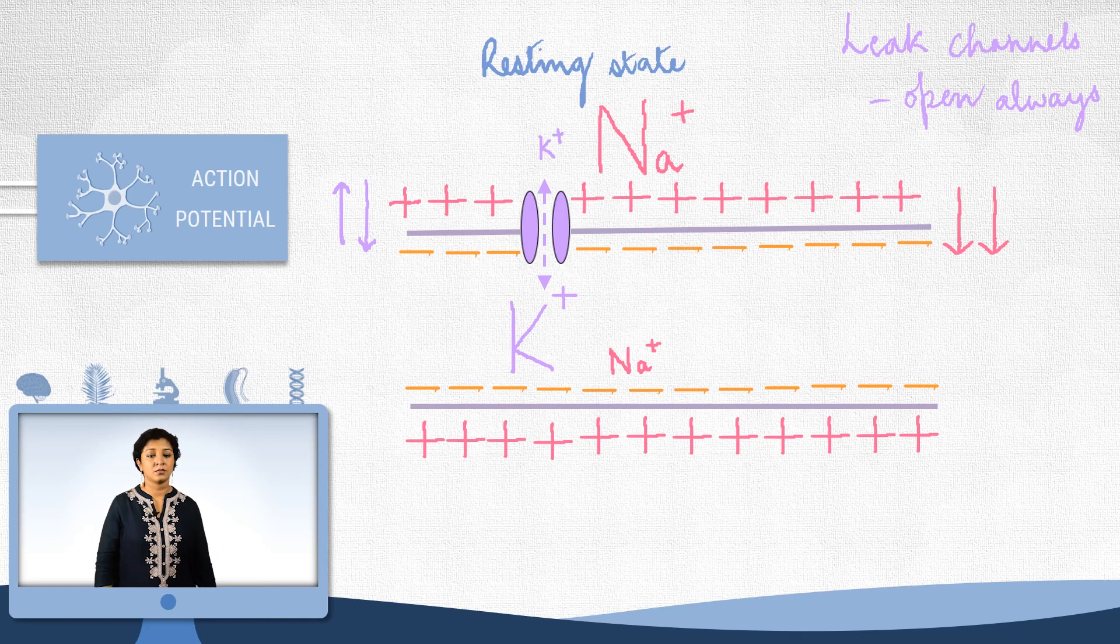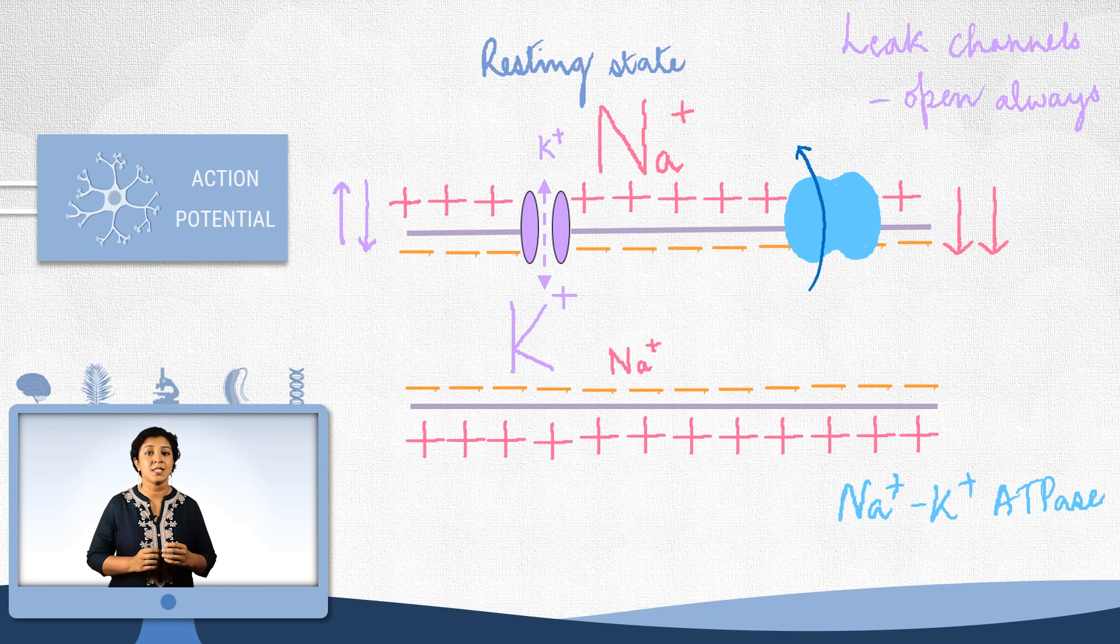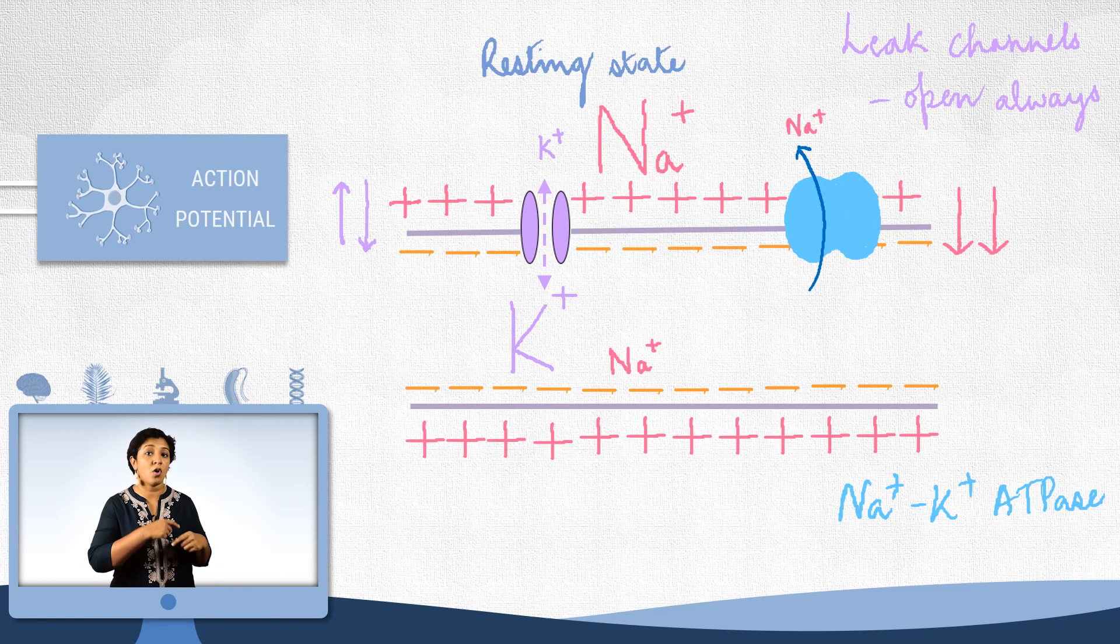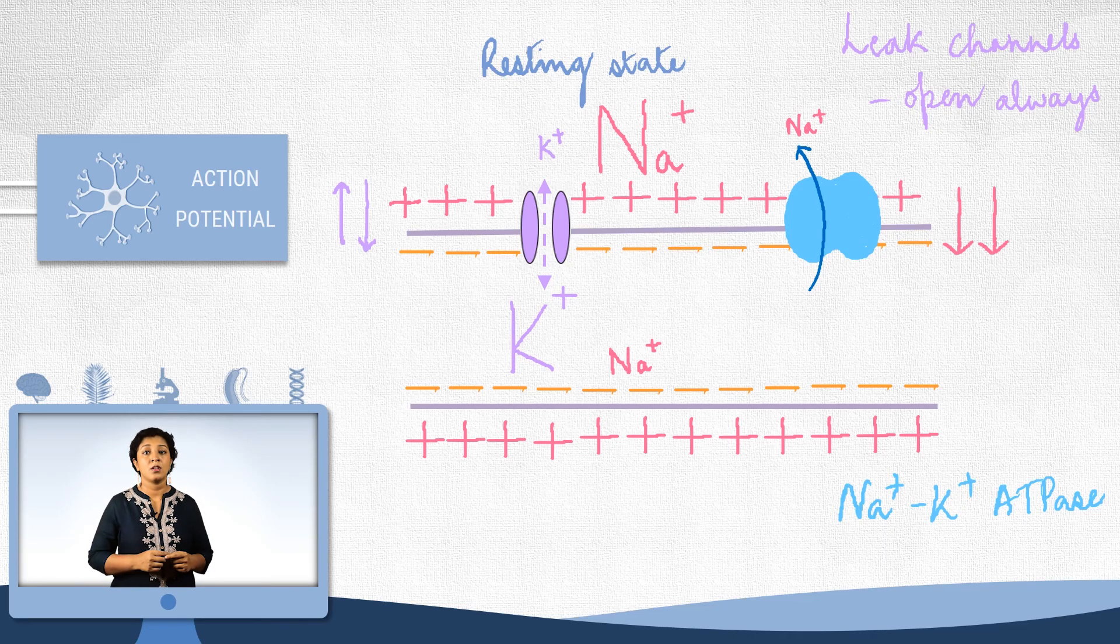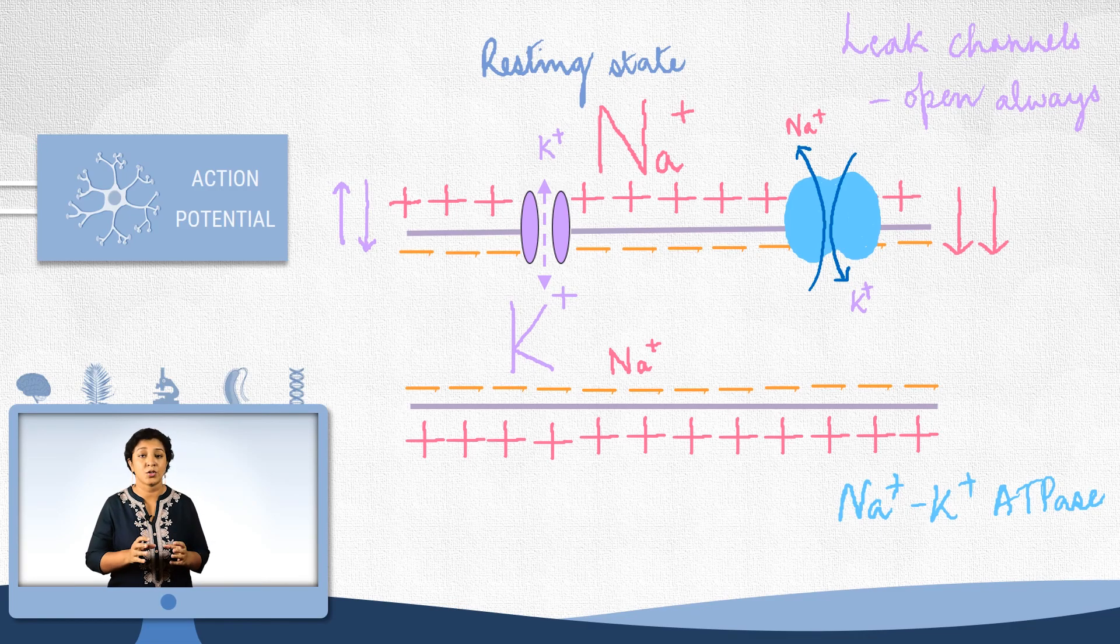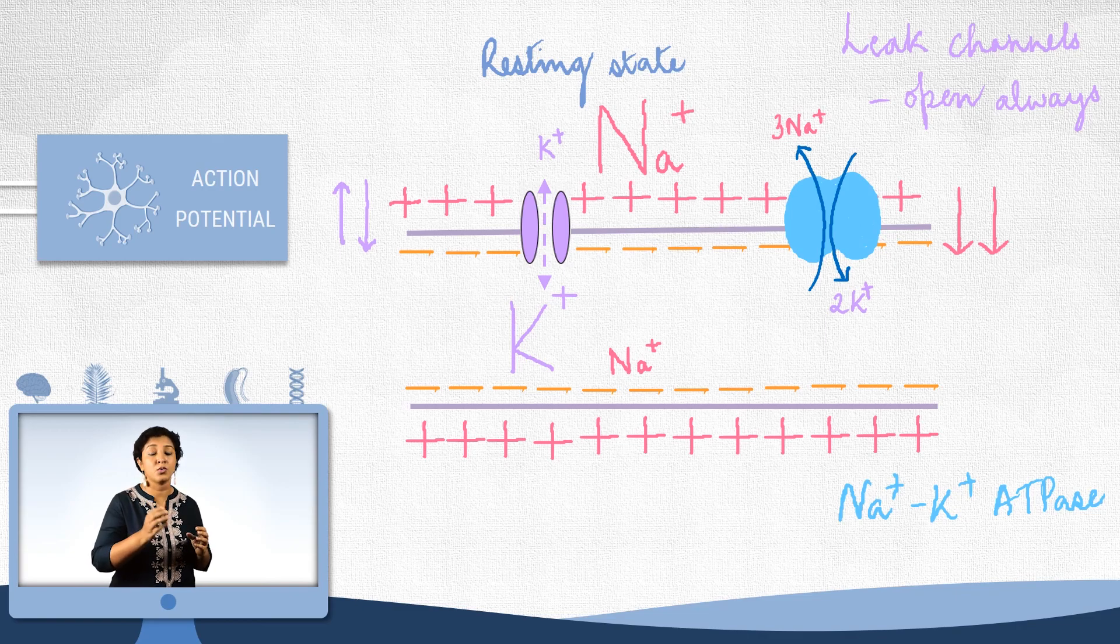So, how does the neuron prevent this from happening? When sodium enters, sodium-potassium ATPase, this transporter will throw out all the sodium ions that sneak in. But every time sodium enters, potassium would have gone out through the leak channels to compensate for the positive charge. So, ATPase will bring back these ions. However, it does not merely exchange sodium for potassium. It throws out 3 sodium ions for 2 potassium ions that it brings in. This way, it contributes to the electrical gradient too.